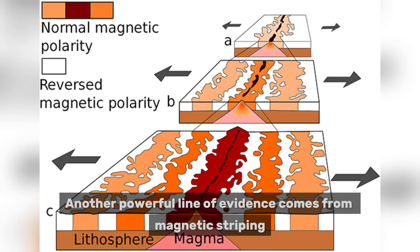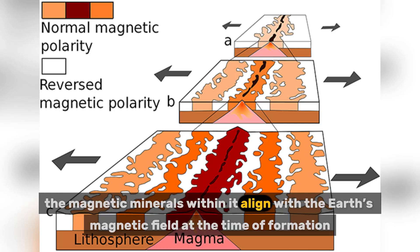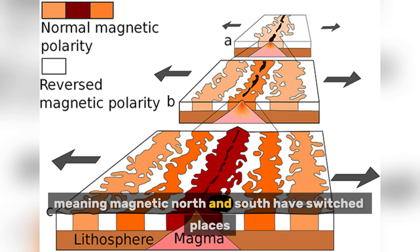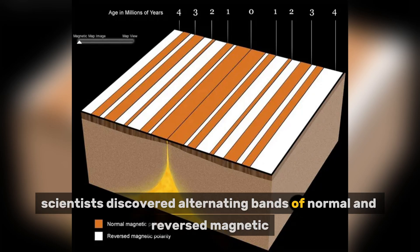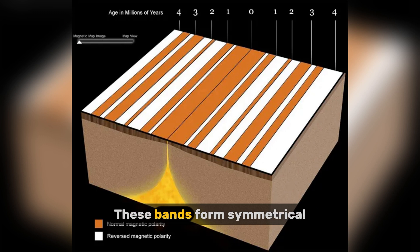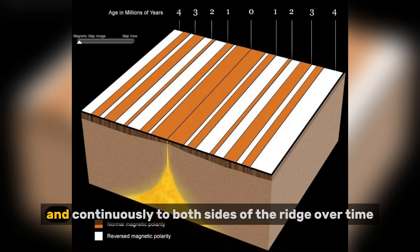Another powerful line of evidence comes from magnetic striping. As the iron-rich lava at mid-ocean ridges cools and solidifies, the magnetic minerals within it align with the Earth's magnetic field at the time of formation. However, Earth's magnetic field has reversed polarity many times throughout geological history, meaning magnetic north and south have switched places. As a result, scientists discovered alternating bands of normal and reversed magnetic polarity on both sides of mid-ocean ridges, forming symmetrical, zebra-like patterns.